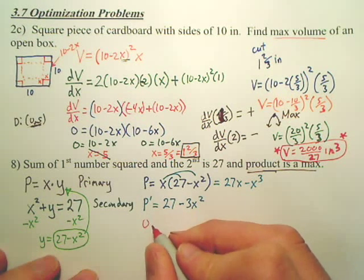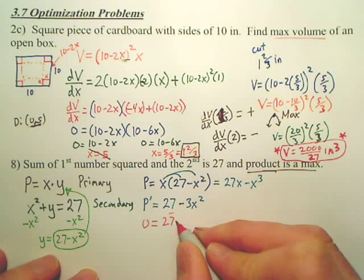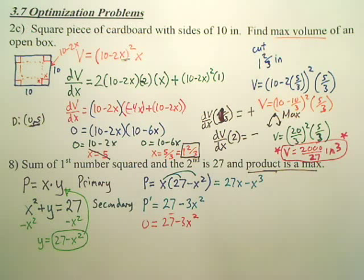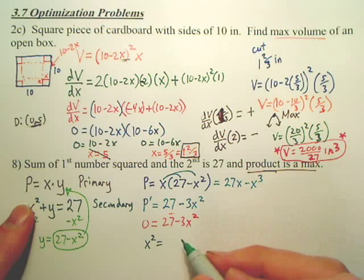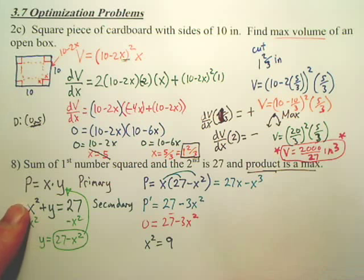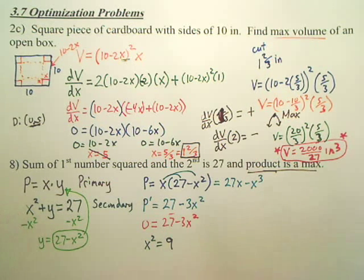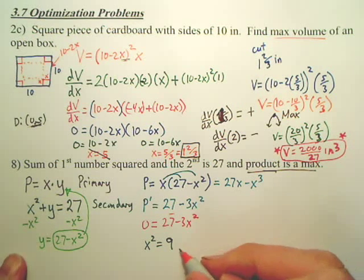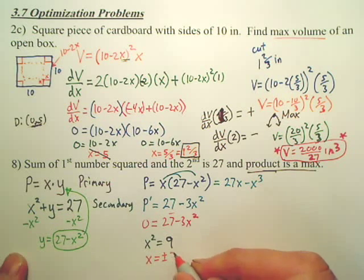Don't we set that equal to zero? Could I pull out, 27 minus 3x squared. And when we solve this, do we end up with like x squared equals 9? Does that look right? You're going to move over this, divide by 3. So what's x? x is positive or negative 3.